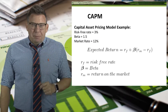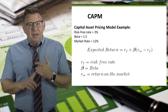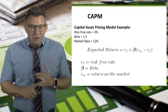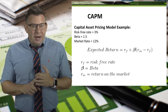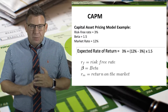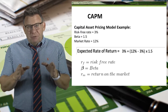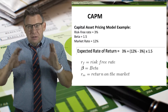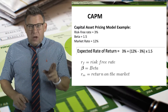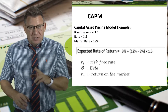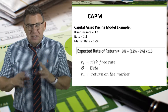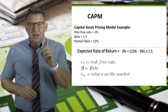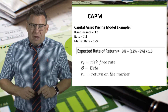Let's look at an example. Assume the risk-free rate is 3%, beta is 1.5, and the market rate is 12%. The expected rate of return is 3% plus (12% minus 3%) times 1.5. Don't forget the order of operations.